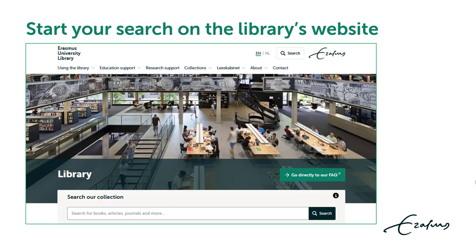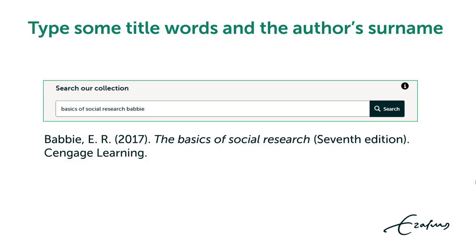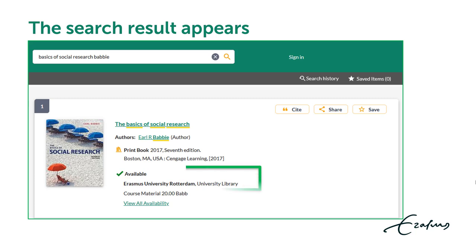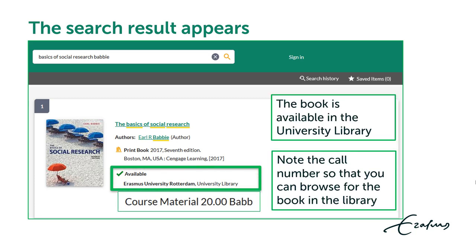Start your search in the search bar on the library's website. Type some title words and the author's surname and click search. In the search result, check below the brief description for the library location, availability status, and call number.